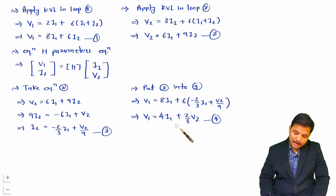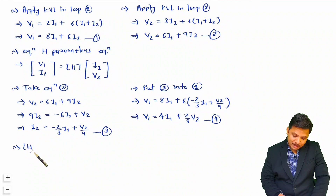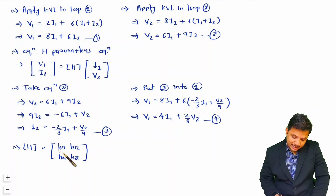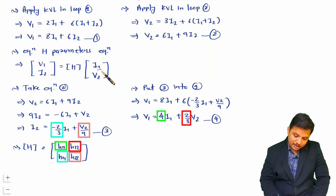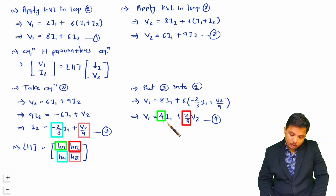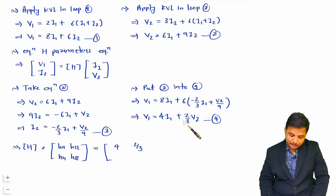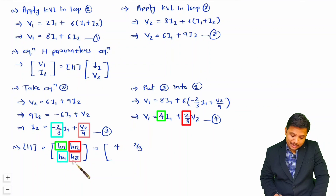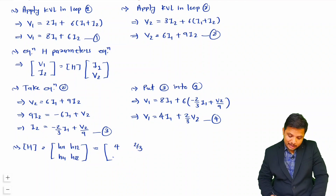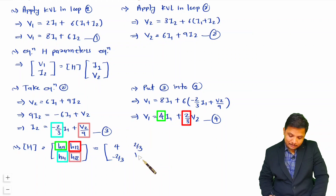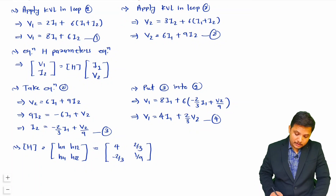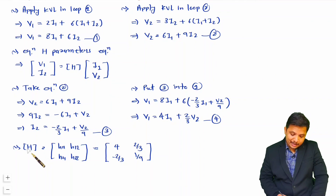Now we have the two equations in the required h-parameter form and can write the h-parameter matrix [h11, h12; h21, h22]. From the V1 equation: h11 = 4 (coefficient of i1) and h12 = 2/3 (coefficient of V2). From the i2 equation: h21 = −2/3 (coefficient of i1) and h22 = 1/9 (coefficient of V2). By comparing equations in the form V1, i2 based on i1, V2 we directly obtain the h-parameter matrix.